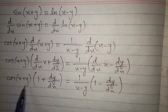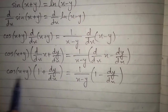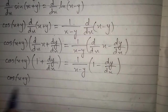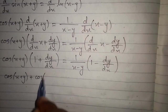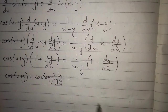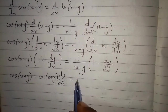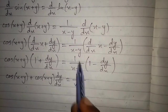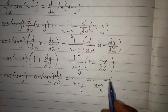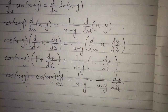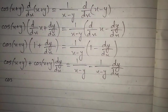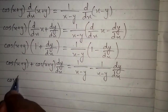Expanding the brackets: cos of x plus y times 1 gives cos of x plus y, plus cos of x plus y times dy/dx. On the right side, 1 upon x minus y times 1 is 1 upon x minus y, and 1 upon x minus y times negative gives minus 1 upon x minus y times dy/dx.